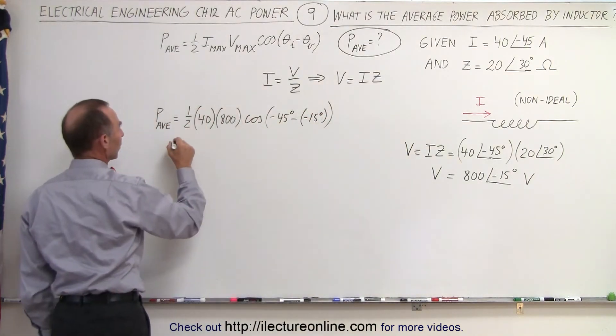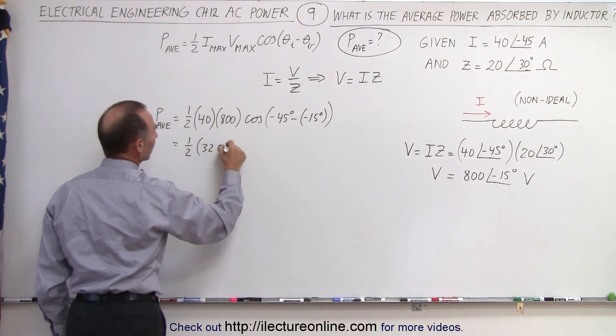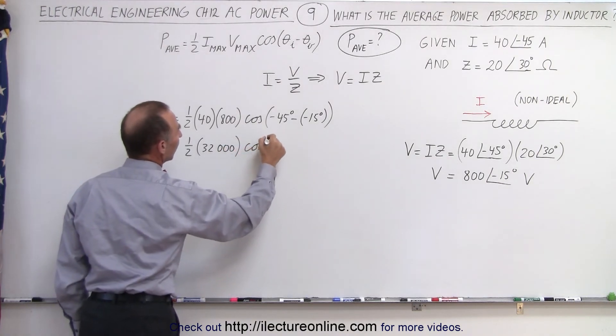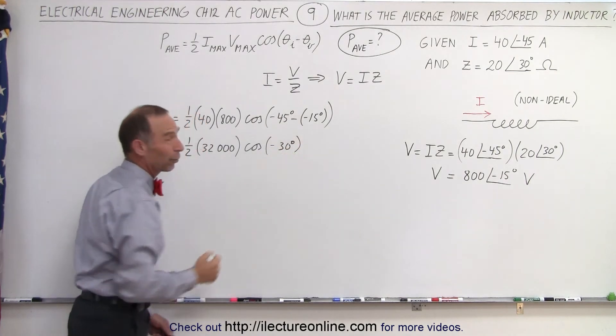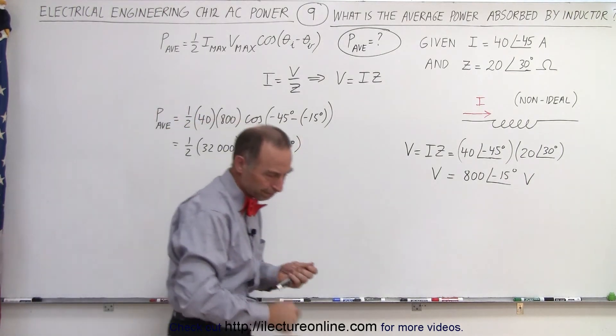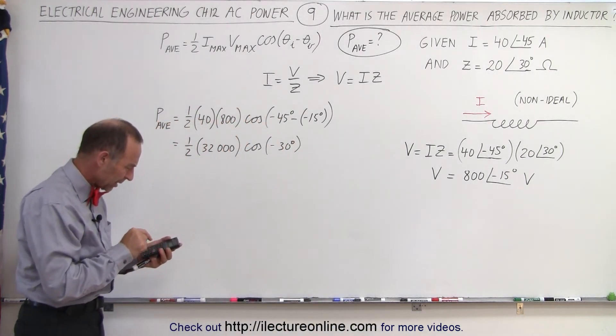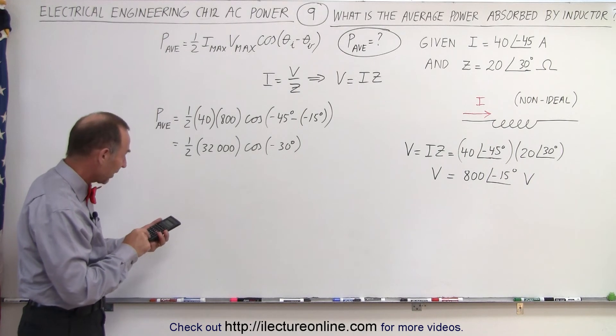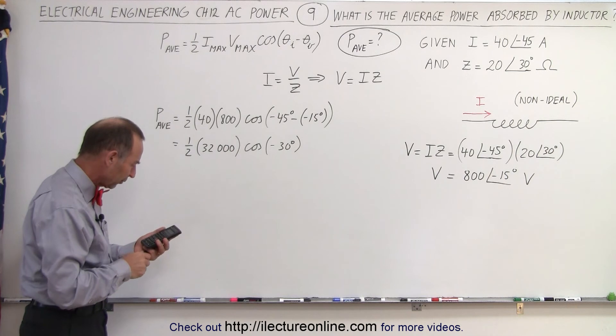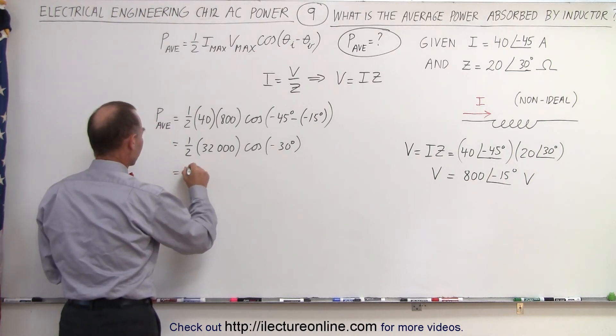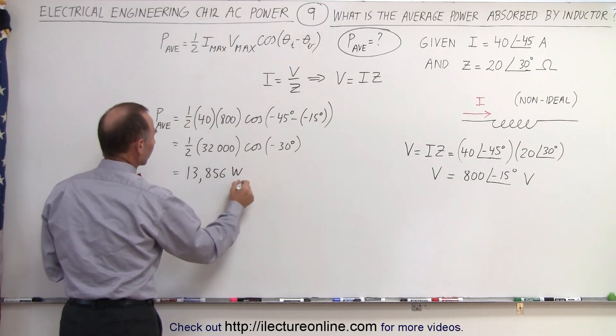That leaves us with one half times, four times eight is 32, with three zeros. And then we multiply it times the cosine of minus 15, this negates, that becomes minus 30 degrees, which of course is the same as the cosine of 30. Then with the calculator, we have 30, take the cosine, and multiply it times half of 32,000, that's times 16,000. And that gives us 13,856, so that's 13,856. And the unit, of course, is watts.